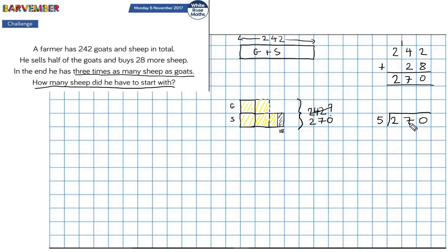Okay. So 5 into 27 is 5. Remainder 2. That's going to give me 54. So I now know that each of these blocks is worth 54. Fantastic.